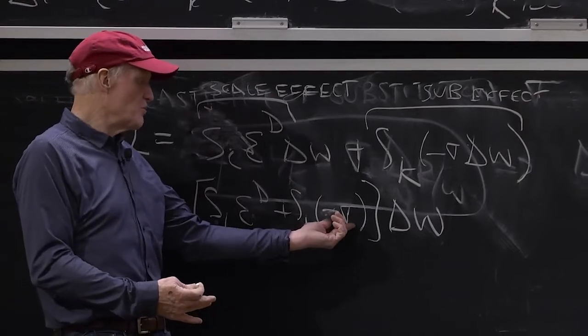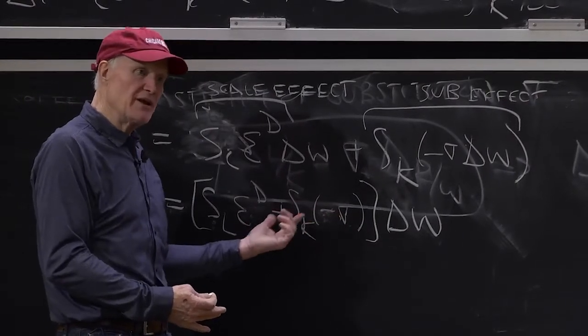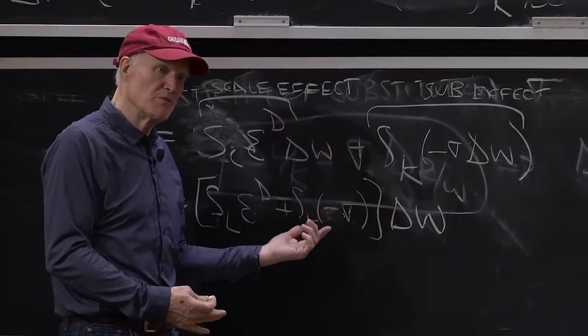The more substitutable labor and capital are, the more labor is going to decline because the more the firm is going to substitute from labor to capital.